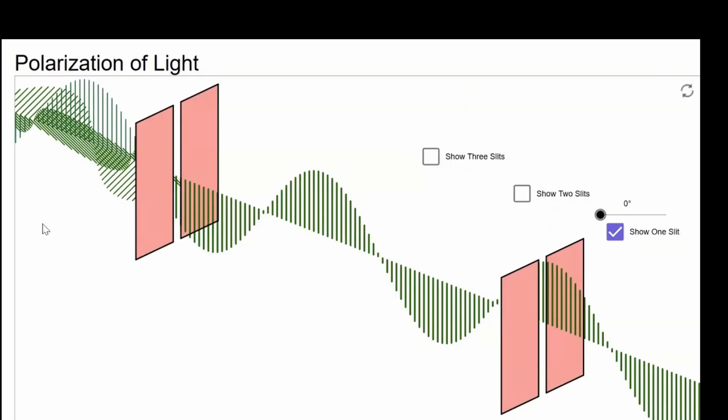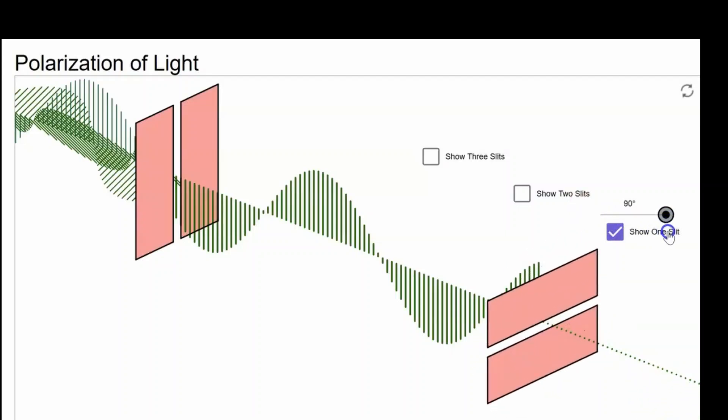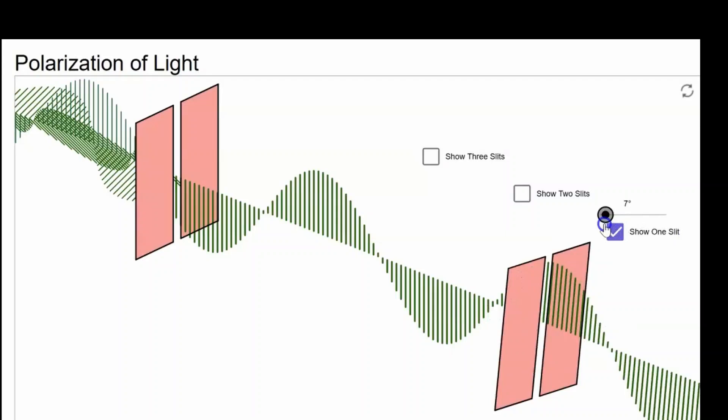Here's a simulation from the website GeoGebra. There's a vertical polarizing filter, and here's another vertical polarizing filter, but this filter allows you to change the orientation, so you can change it from vertical to horizontal, or any angle in between.